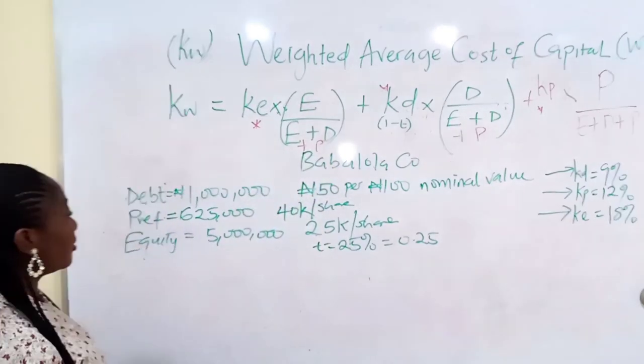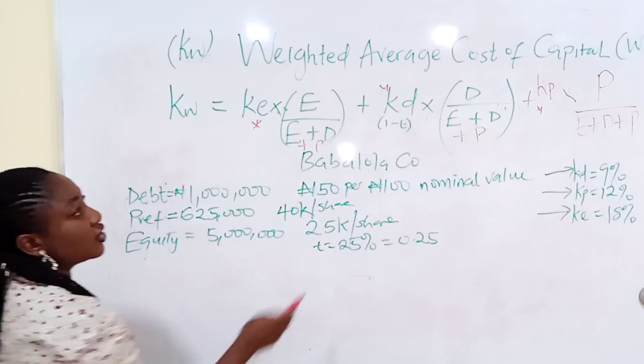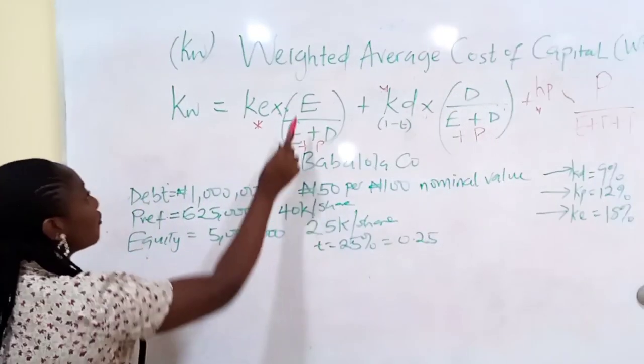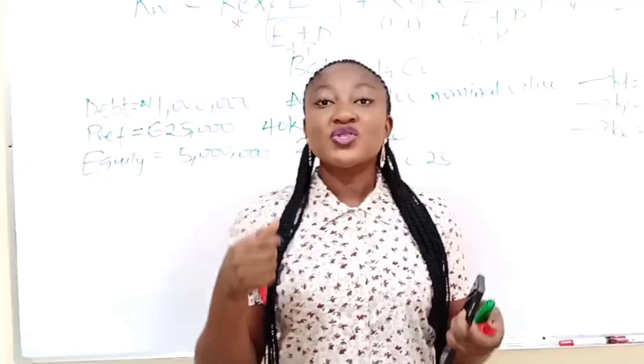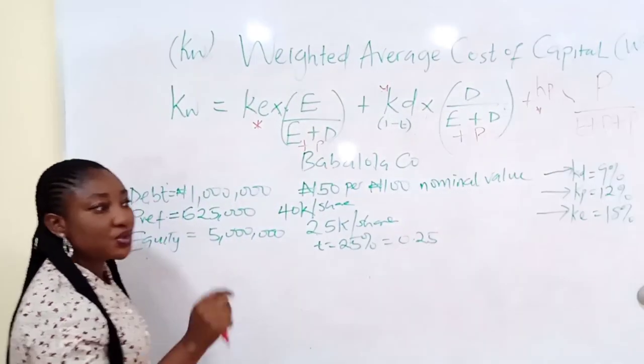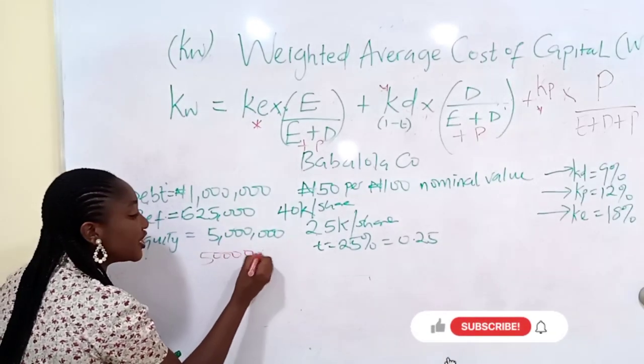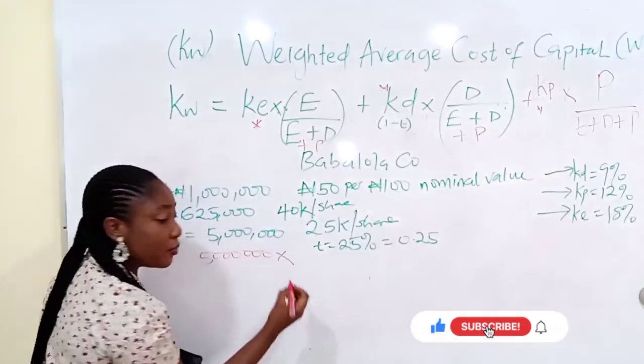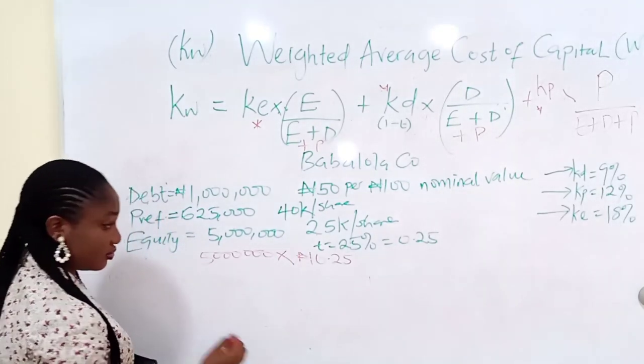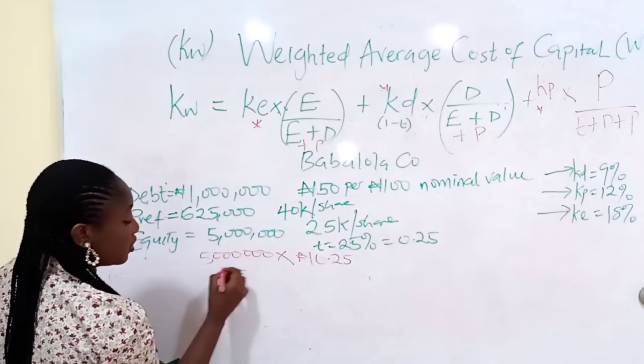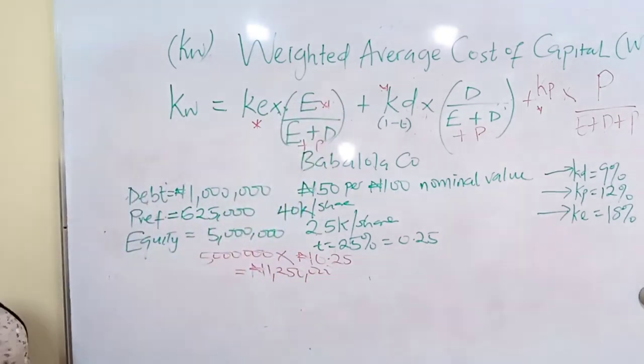Do they give us the market value of equity? E means the market value of equity over the total market value of their capital. For E, equity is 5 million shares at 25 kobo per share. Shares is like a certificate of ownership. So 5 million shares times 0.25 Naira per share, and that gives you 1 million 250,000 Naira. We already have our equity value.